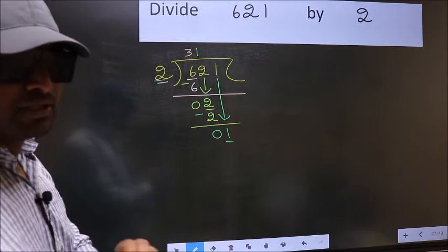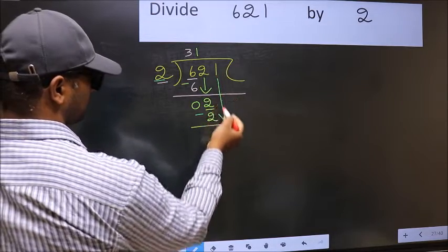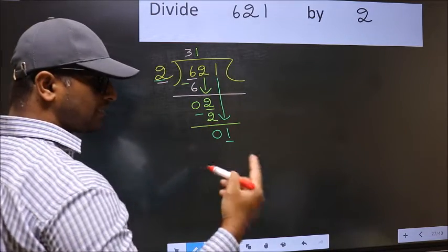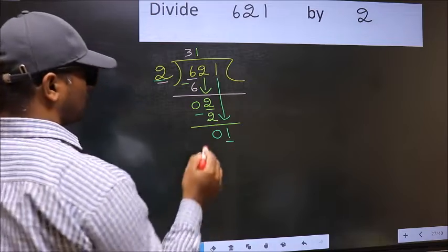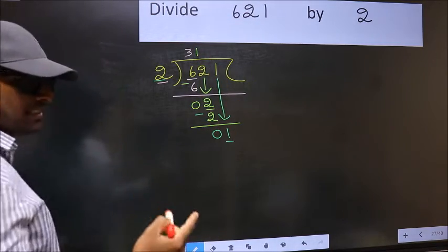Why is it wrong? Because just now you have brought this number down. And in the same step, you want to put a dot and take 0. Which is wrong.